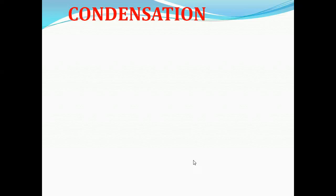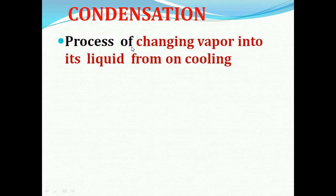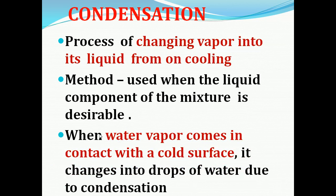The next method is condensation. Condensation is the process of changing vapor into its liquid form on cooling. The process of changing vapor into liquid — when we are cooling the vapor it gets converted into liquid — that process is called condensation. This is just the reverse of evaporation. Condensation is used when the liquid component of the mixture is desirable. When water vapor comes in contact with a cold surface, it changes into drops of water due to condensation.